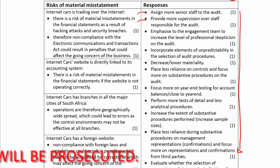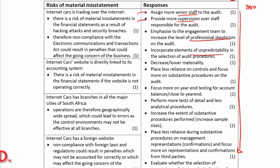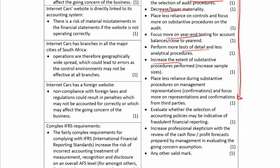Those responses come straight out of ISA 330: more senior staff, more supervision, increased professional skepticism, unpredictability in audit procedures. Then you make general changes to the nature, timing, and extent of your audit procedures - decrease materiality, do more testing at year end, more tests of details, and increase the extent of your sample sizes for substantive procedures.